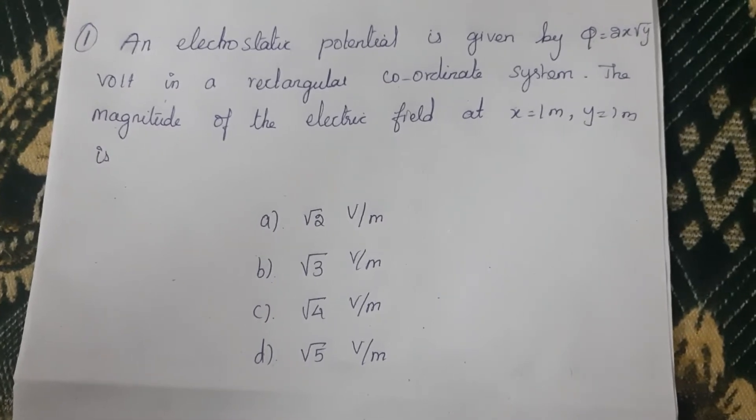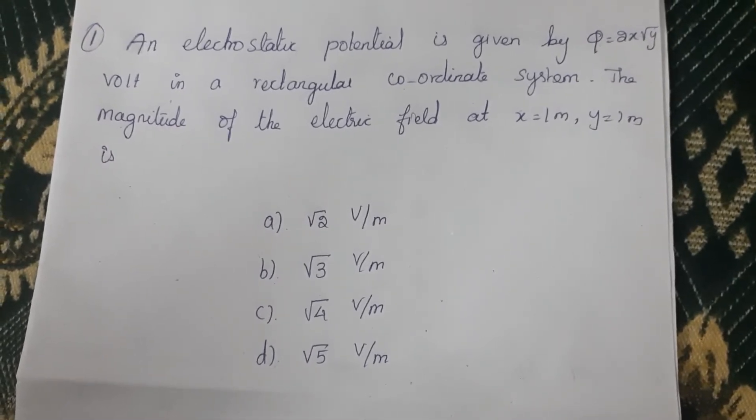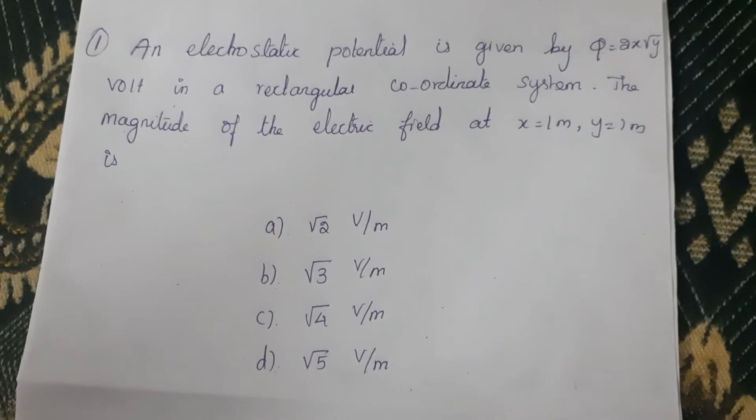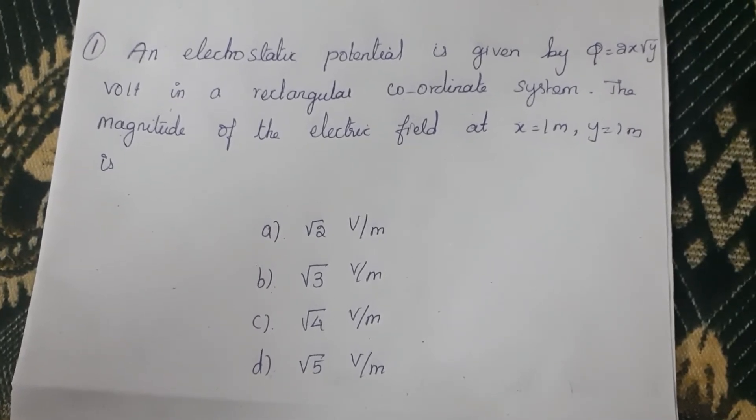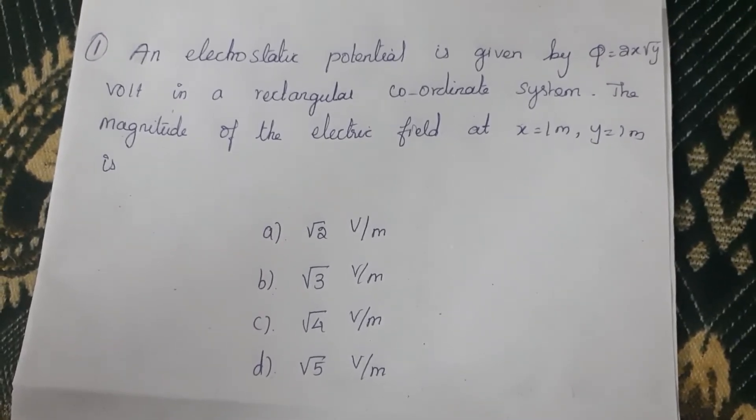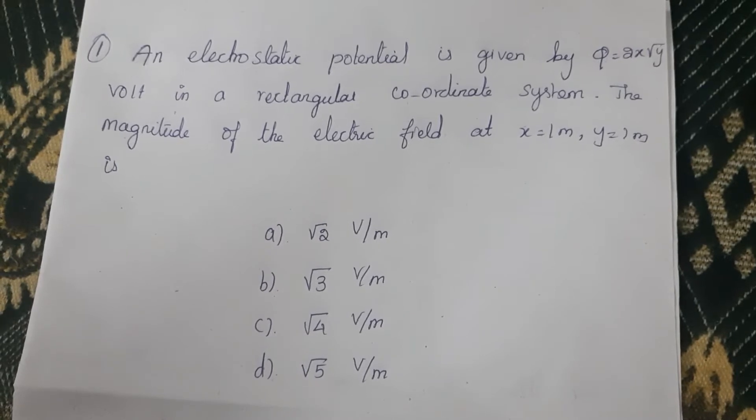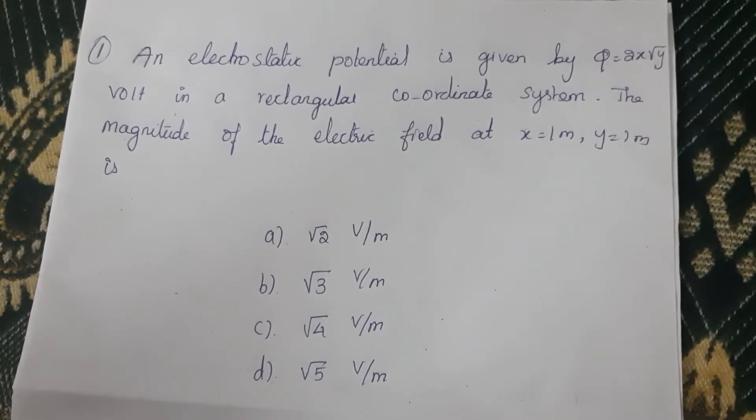First question: An electrostatic potential is given by φ = 2x√y volt in a rectangular coordinate system. The magnitude of the electric field at x = 1 meter and y = 1 meter is: